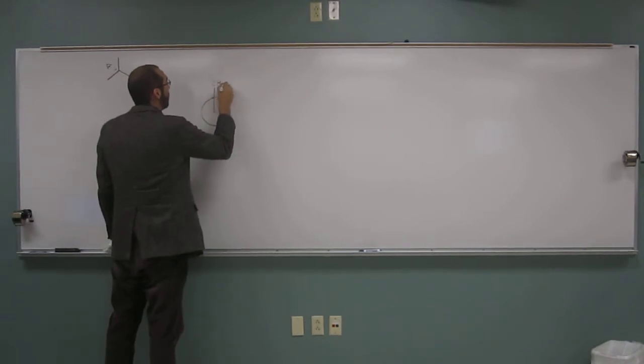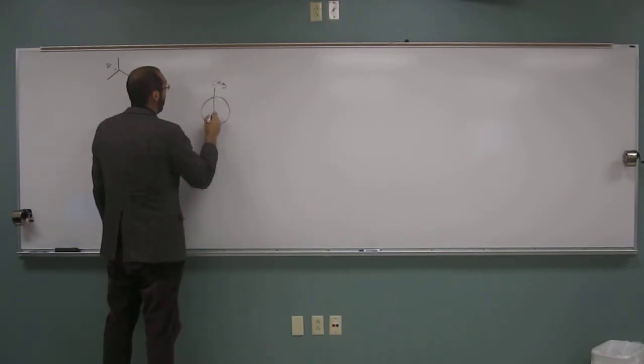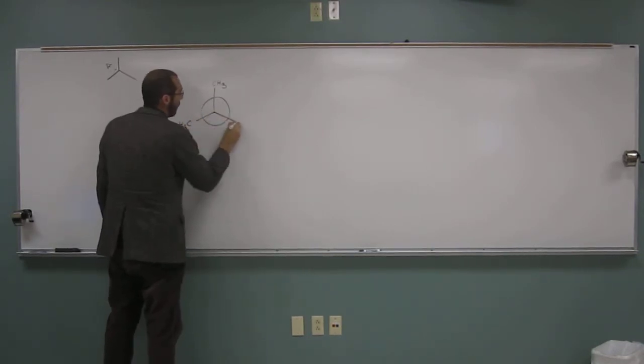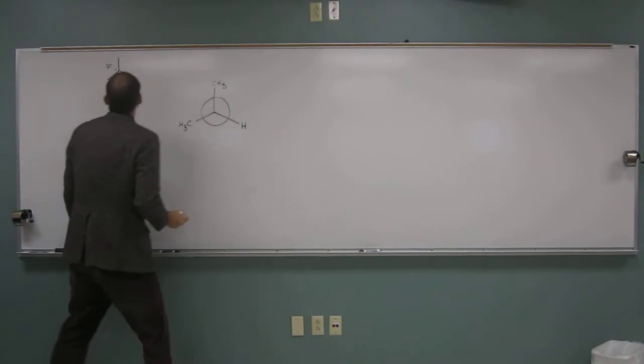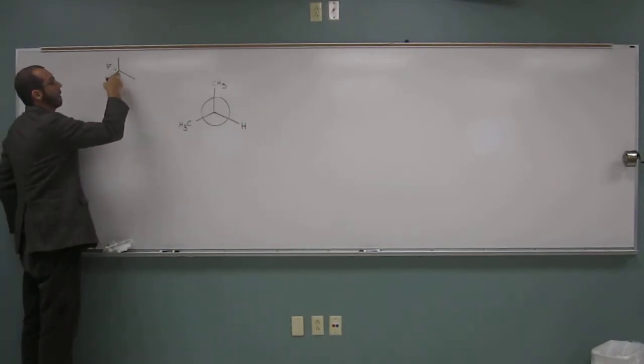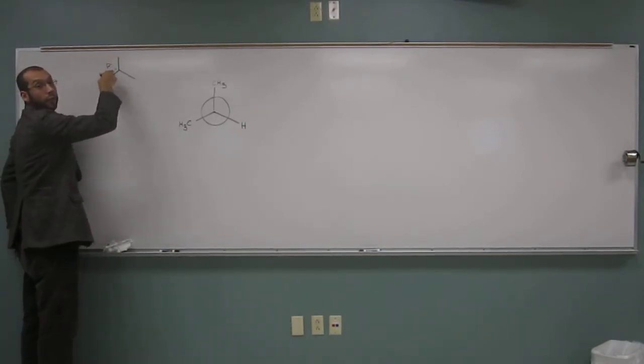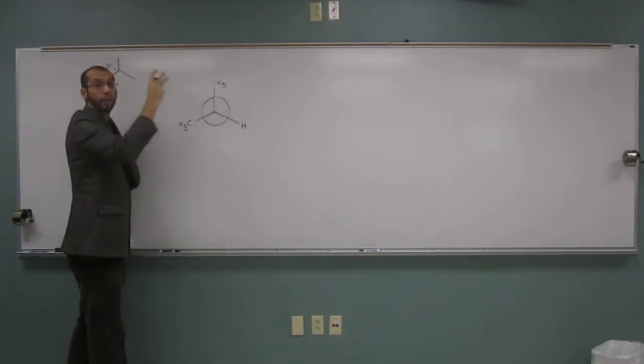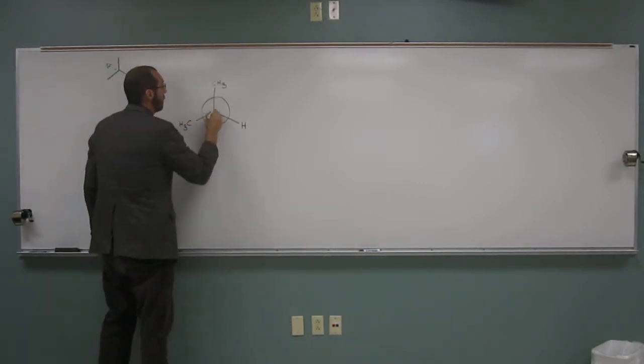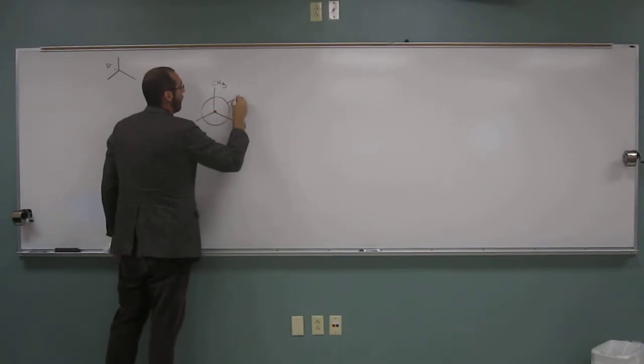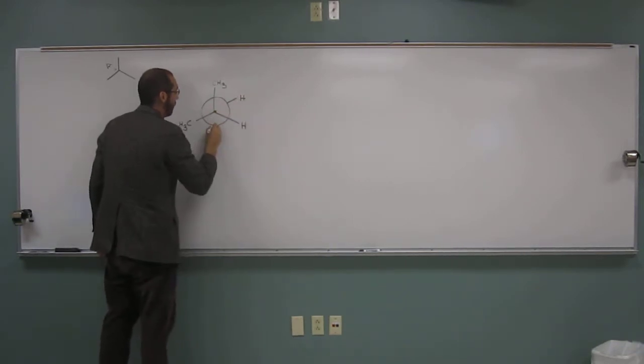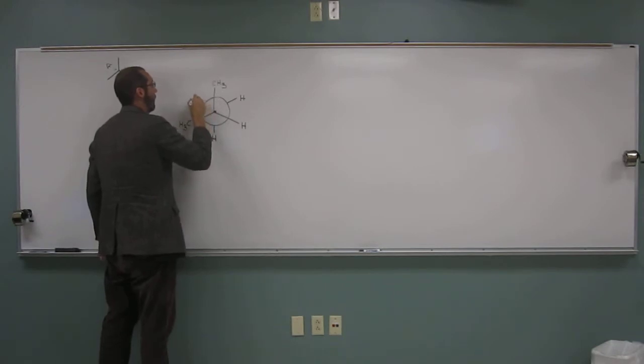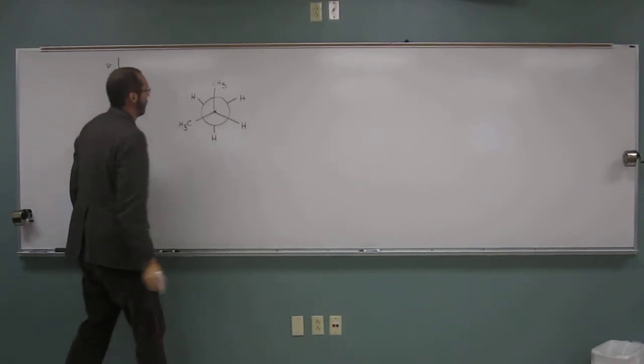So methyl group there, methyl group, and hydrogen there. OK, so on this carbon here, we've got a methyl, a methyl, and a hydrogen, OK? So on this carbon down here, on this carbon back here, C1, we have three hydrogens, OK? So like that.